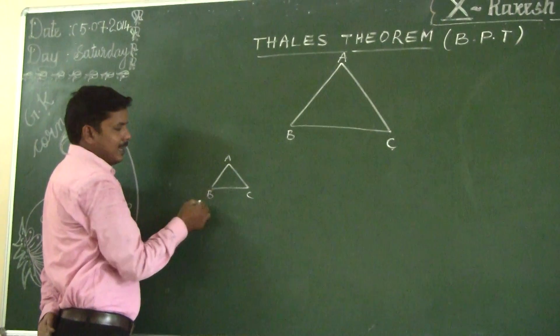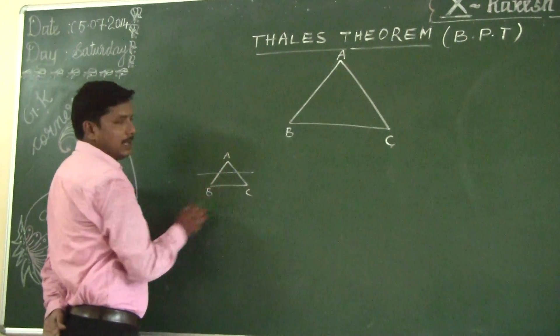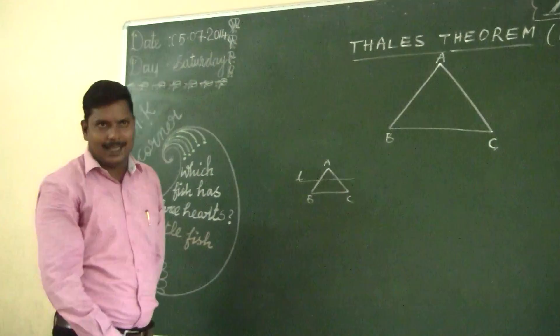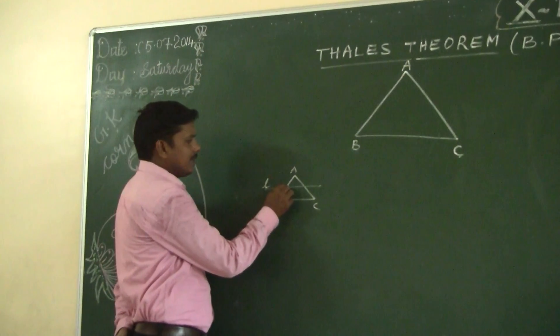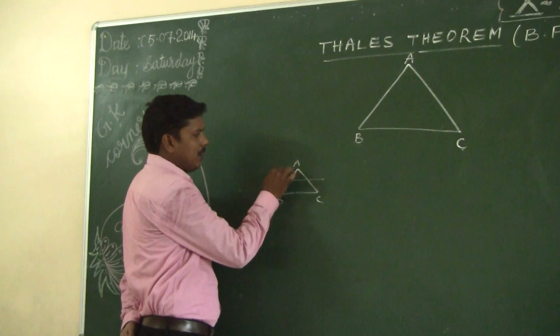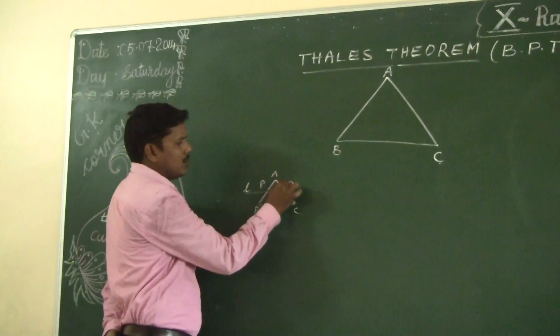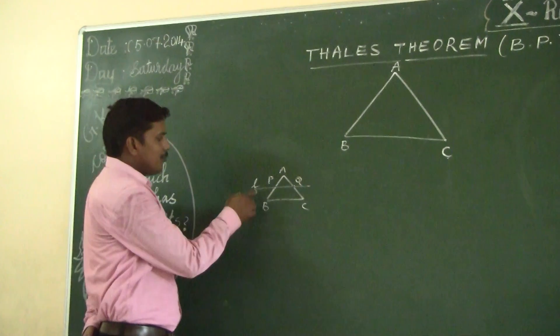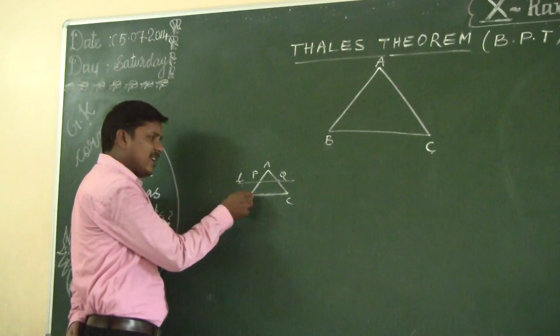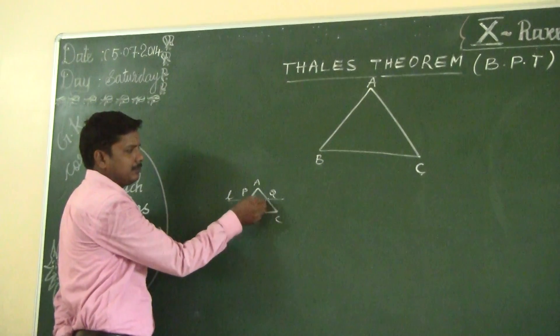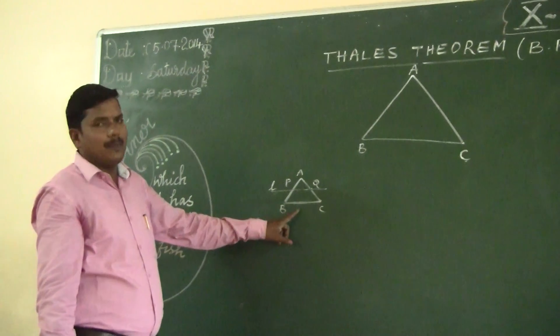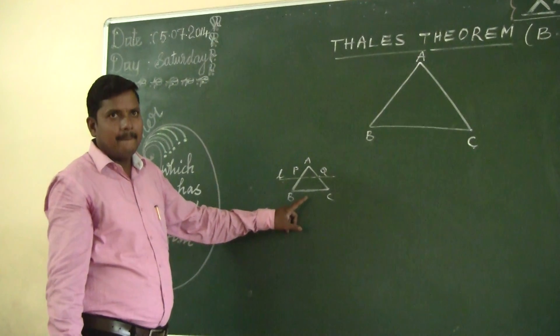For the triangle, I draw a line parallel to BC. The name of the line I was given by L. The line L intersects the side AB at the point P and side AC at the point Q. According to the Basic Proportionality Theorem, if you draw a line parallel to any one side of a triangle, it divides the remaining two sides. For which side? BC.